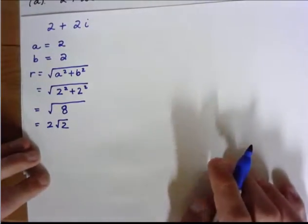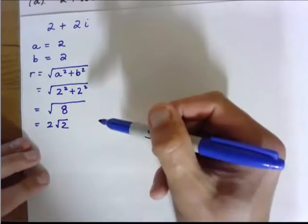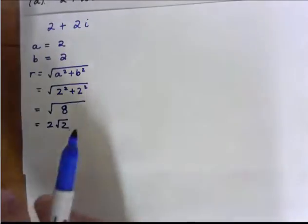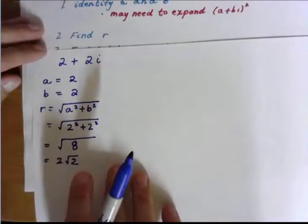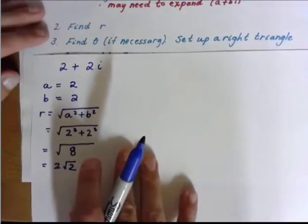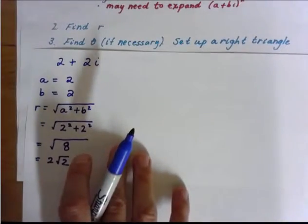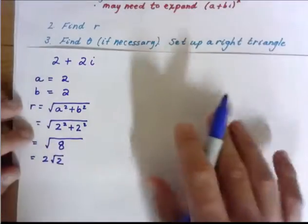So now I have my A and B. There's my R value. And so if I look at where I am in the process here, I've done R. Now I need to find my theta. So let's go ahead and draw this picture.